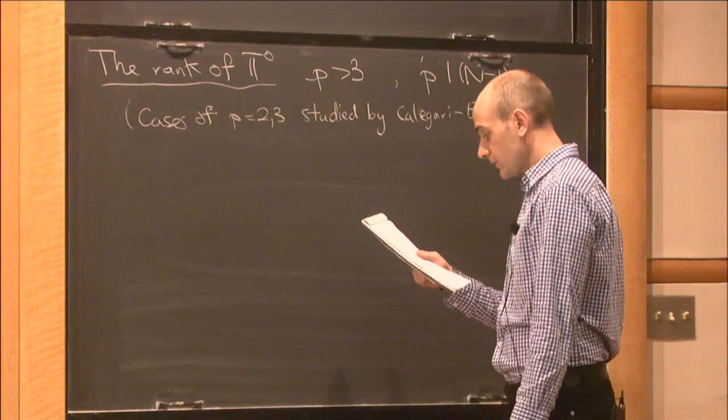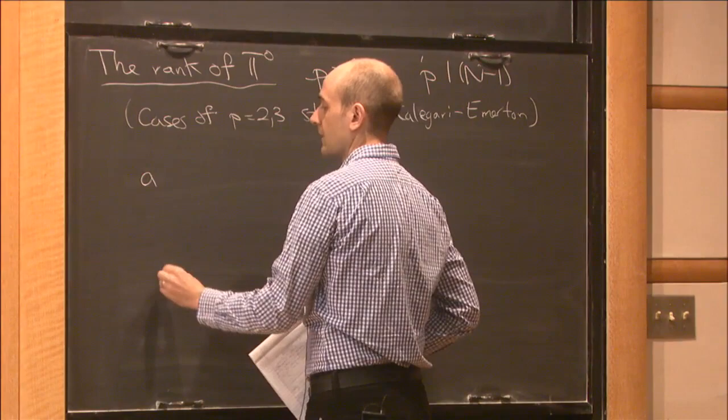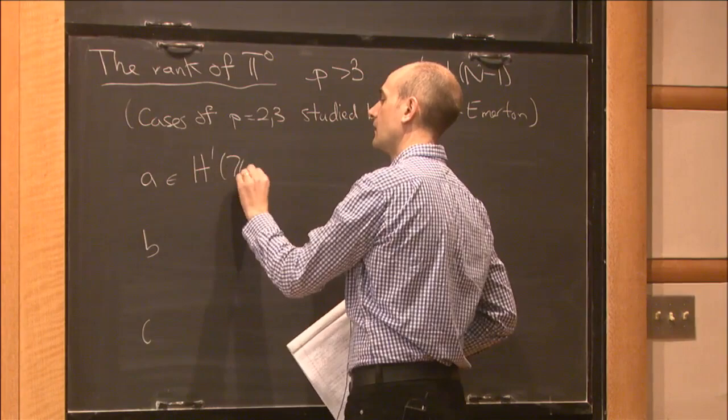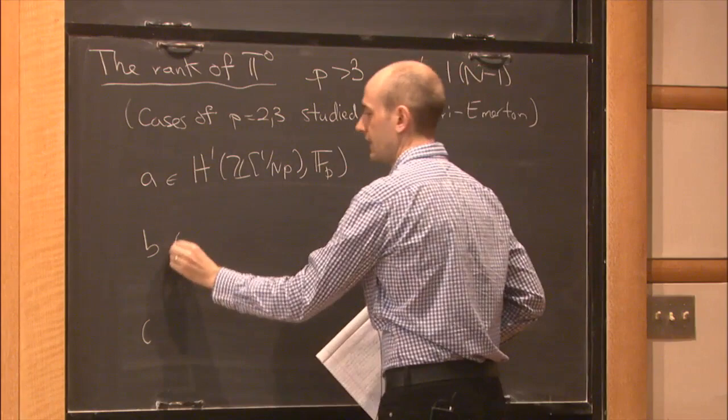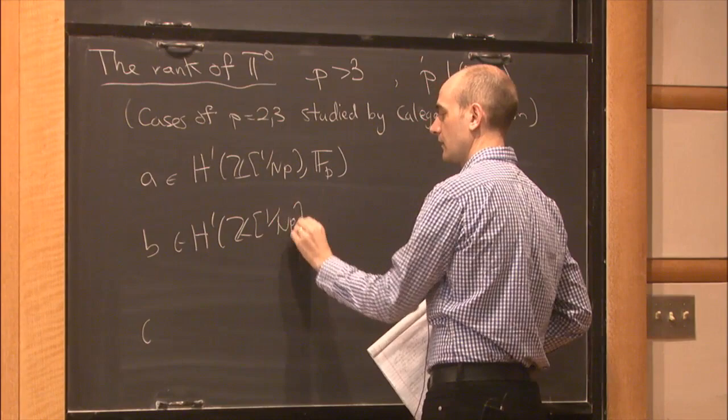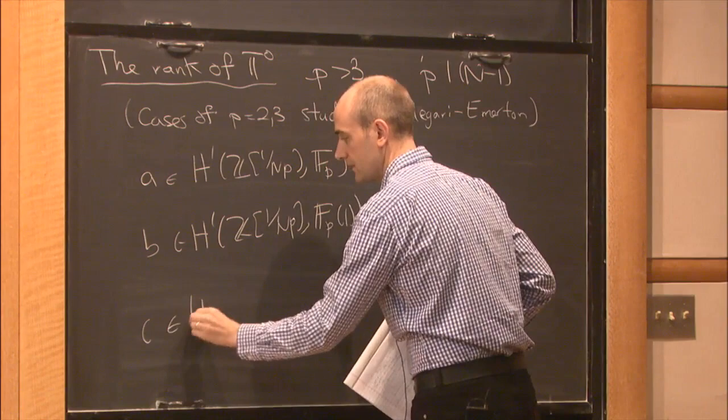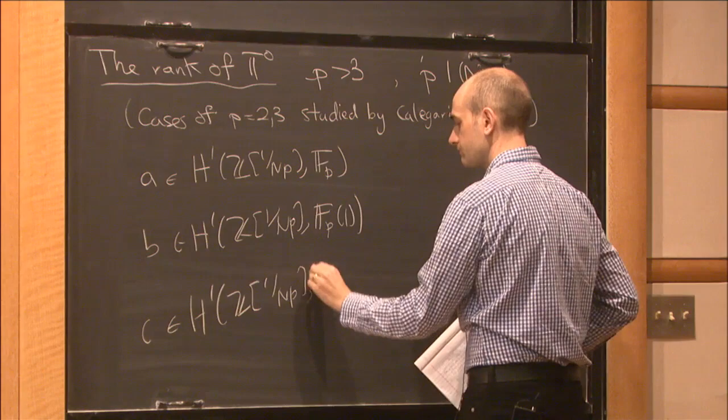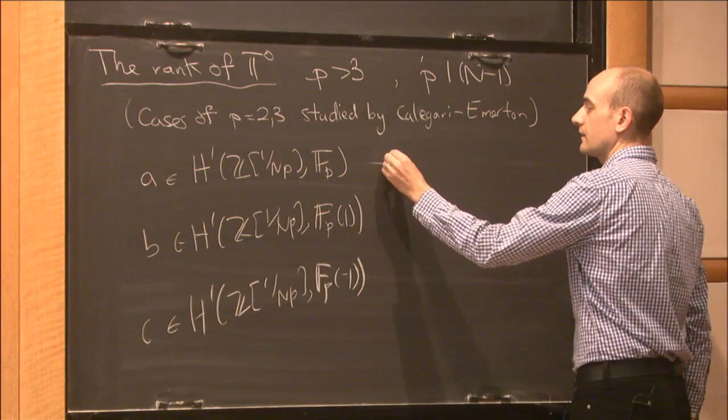To describe the rank of T, I want to describe it in terms of some algebraic number theory data. I'll express the answer in terms of Galois cohomology. I want to describe three classes that show up — I call them A, B, and C. A lives in a certain Galois cohomology group with trivial coefficients, B has a twist by the cyclotomic character, and C has a minus-one twist coefficient.